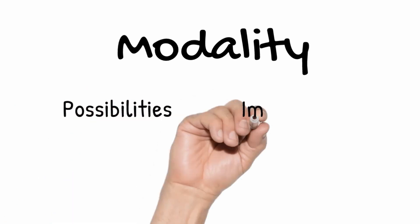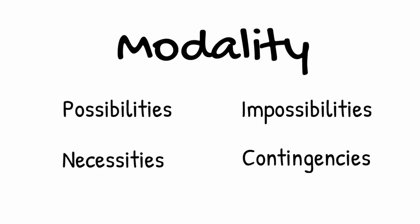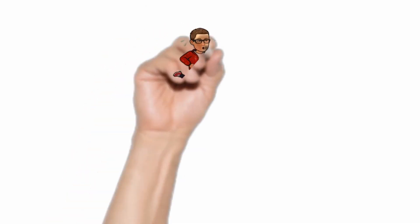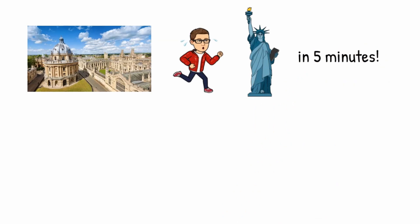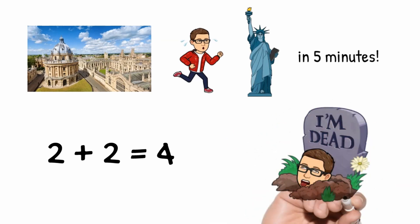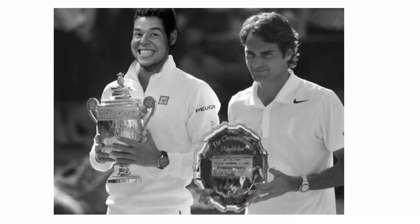You may have heard the term modality being used by philosophers. You can think of this as the study of possibilities and impossibilities, necessities and contingencies. Here are some examples of modal statements: it's impossible for me to run from Oxford to New York in five minutes; it's necessary that two plus two equals four; it's contingent that I exist; and it's possible that I won Wimbledon by beating Roger Federer in the final. All of these propositions express modal claims.